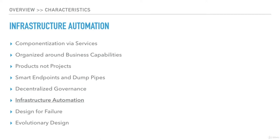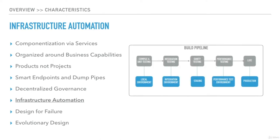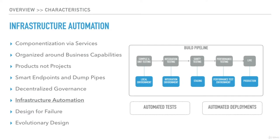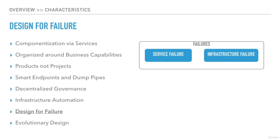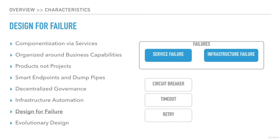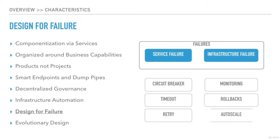Our build pipelines should be automated — this includes automated tests and automated deployments. We should enable these automations in the pipeline to speed up our deployments. The architecture should be designed to handle failures. Both service and infrastructure failures should be handled properly. Many design patterns help in implementing service failure handling, including circuit breaker, retry, and timeouts. Services and infrastructure should be continuously monitored for current or future failures, and we should have the capability to automatically fix issues through rollbacks, auto scaling, etc.